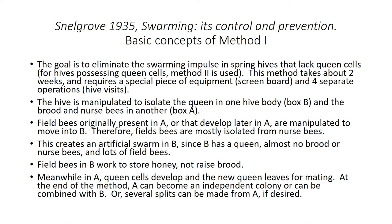Field bees in B work to store honey, not raise brood. Meanwhile in A, queen cells develop and the new queen leaves for mating. At the end of the method, A can become an independent colony or can be combined with B, or several splits can be made from A if desired.